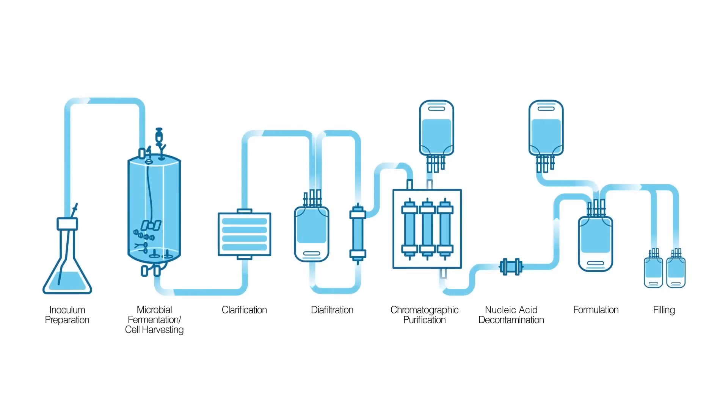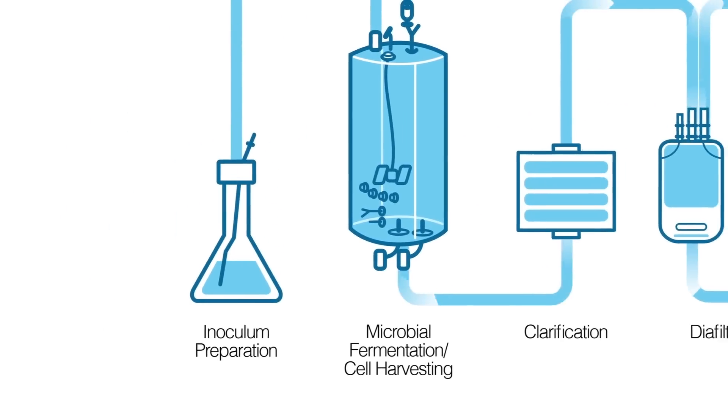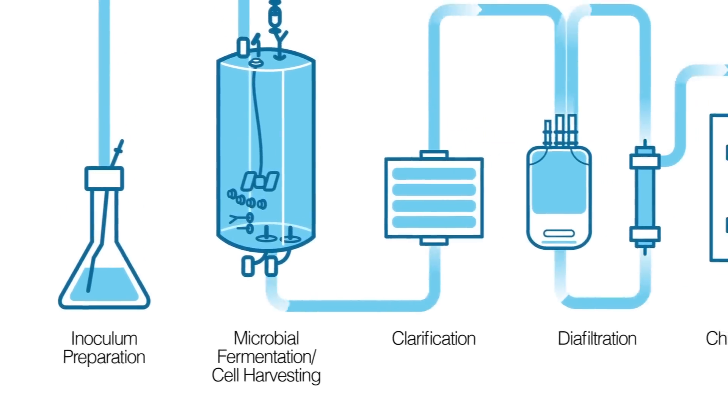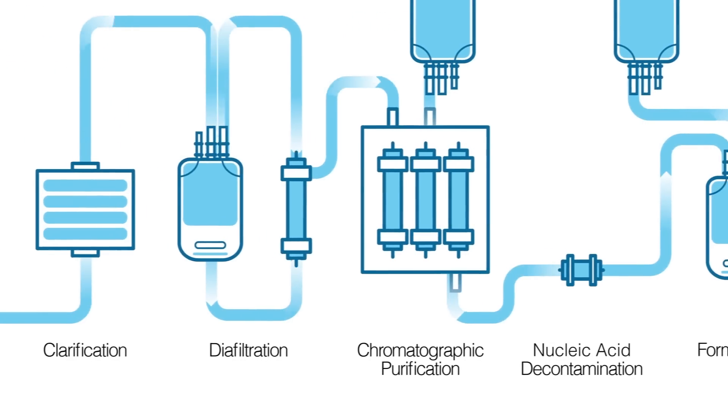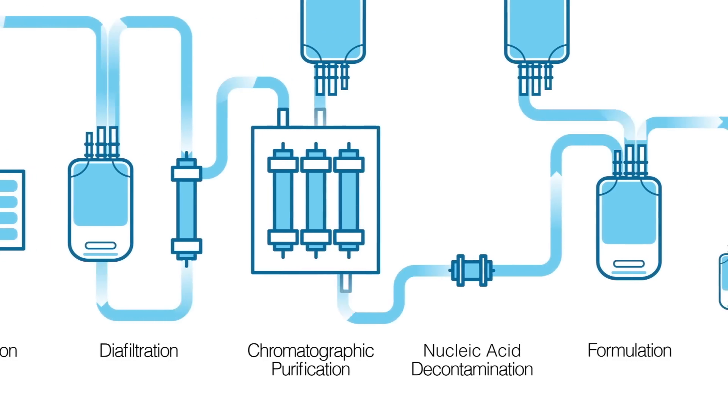The single-use system utilizes disposables in a closed system. We use sterile bioreactor bags, tubing, connectors, chromatography columns, and other equipment only once in all of the enzyme production steps within the closed system.